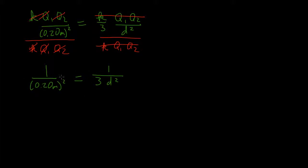And then since these fractions are equal, their reciprocals must be equal. So I'll just show that as raising this to the negative 1 power. And when we do that, all that happens is the fraction flips. We get 0.20 meters squared equals 3 D squared.